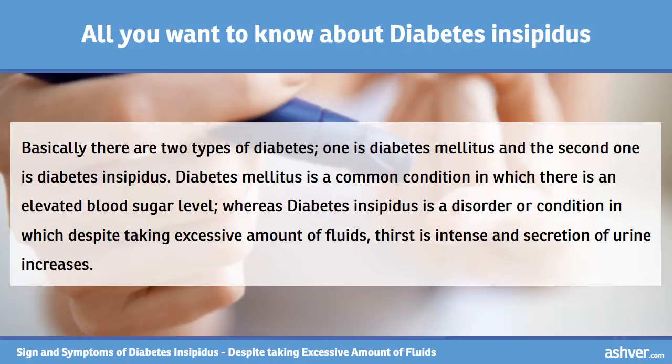Diabetes mellitus is a common condition in which there is an elevated blood sugar level, whereas diabetes insipidus is a disorder or condition in which, despite taking an excessive amount of fluids, thirst is intense and secretion of urine increases.